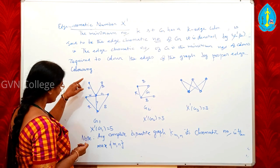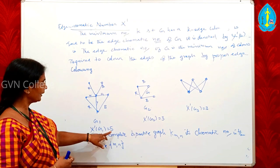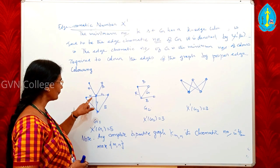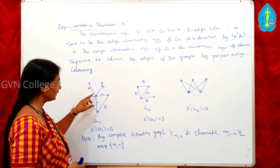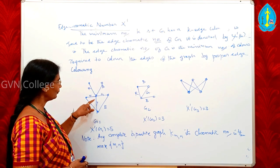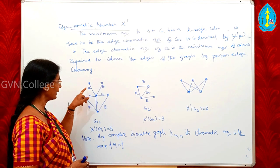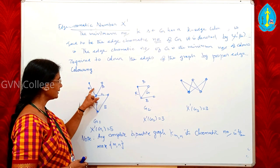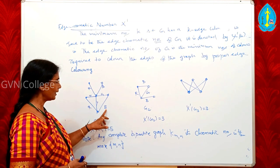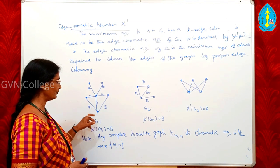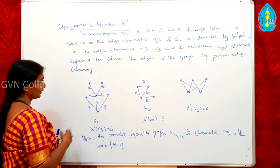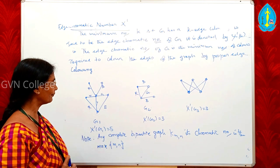Consider graph G1: χ'(G1) = 5, because there are 5 mutually adjacent edges that must each receive a different colour — white, yellow, green, black, and red. These 5 edges receive 5 colours, and the remaining edges also receive distinct colours. Therefore χ'(G1) = 5.